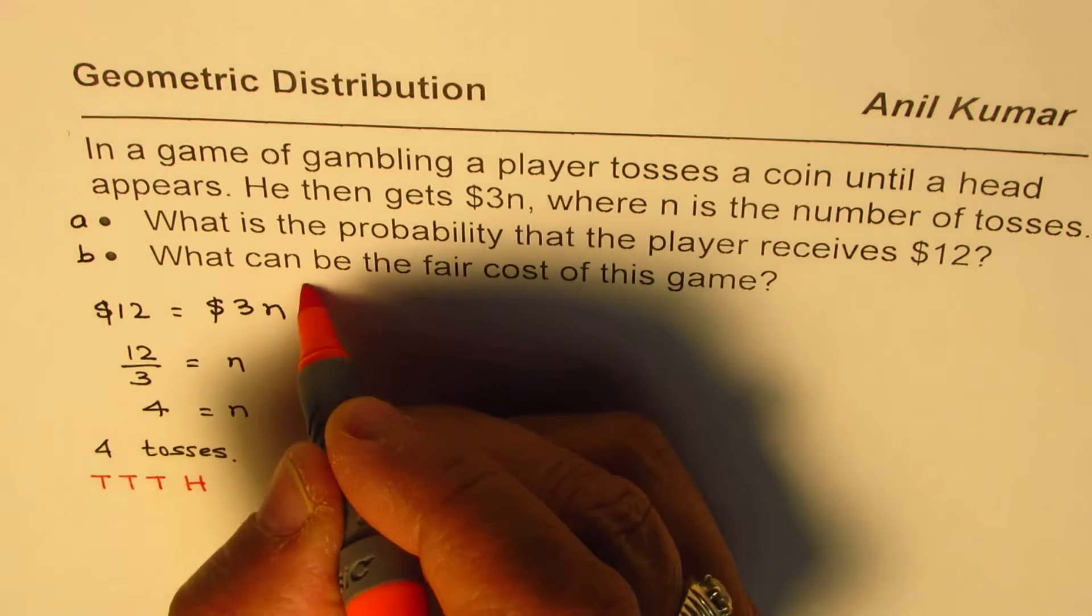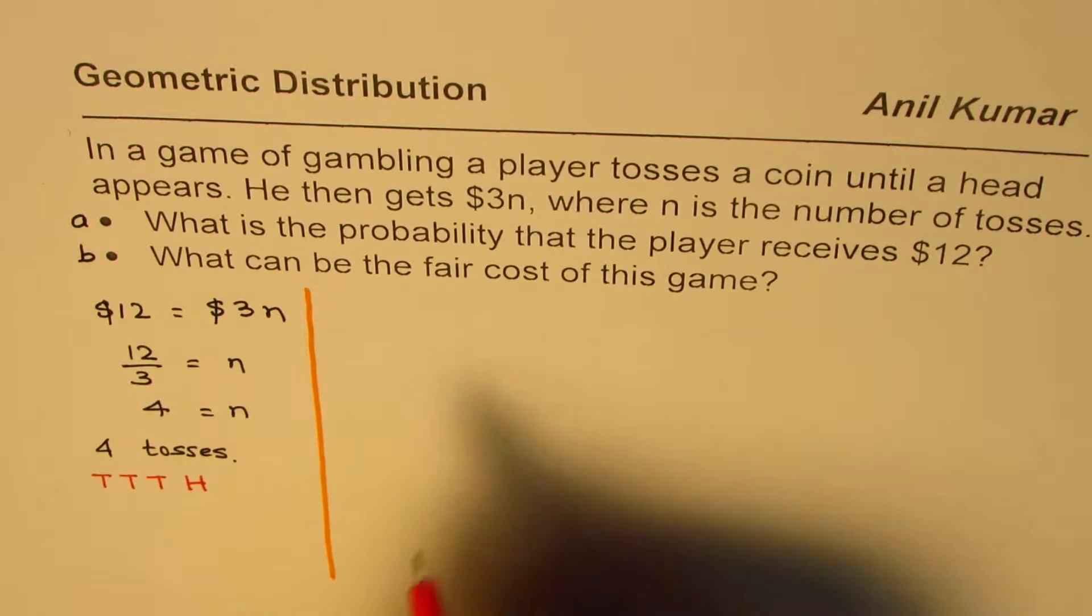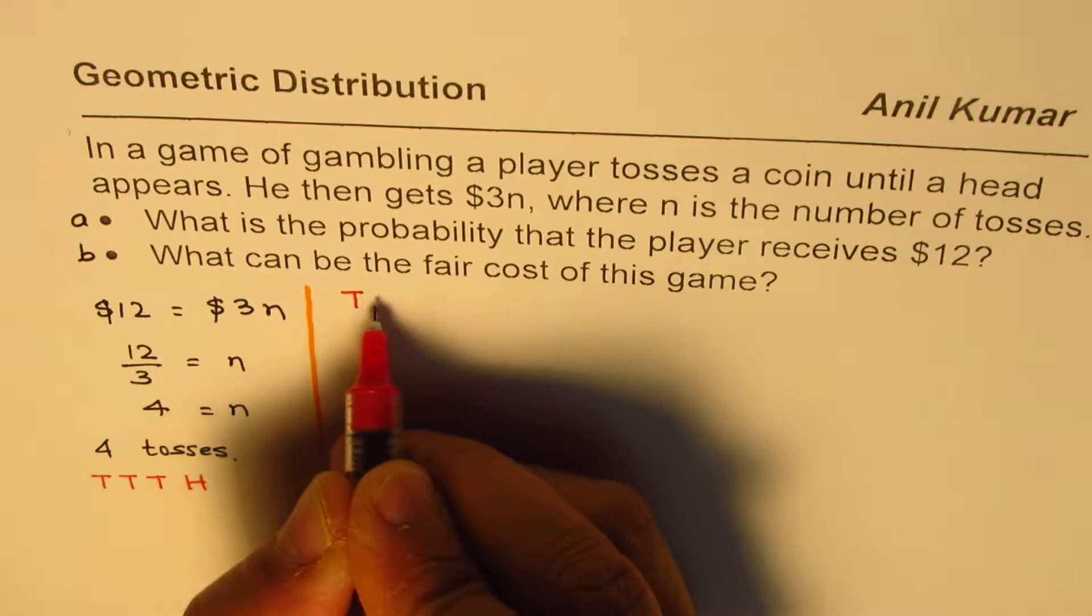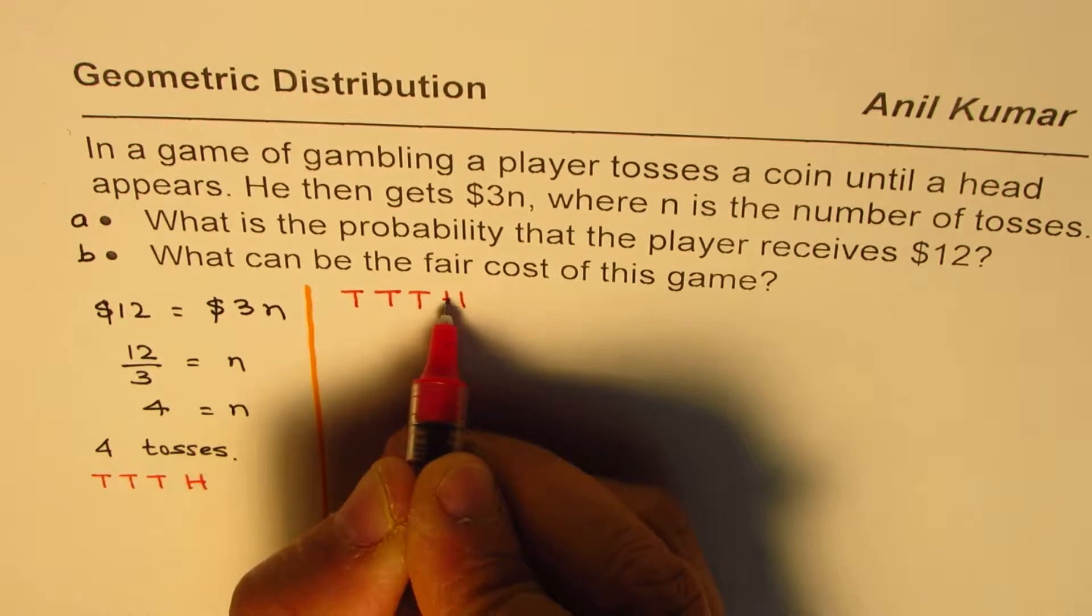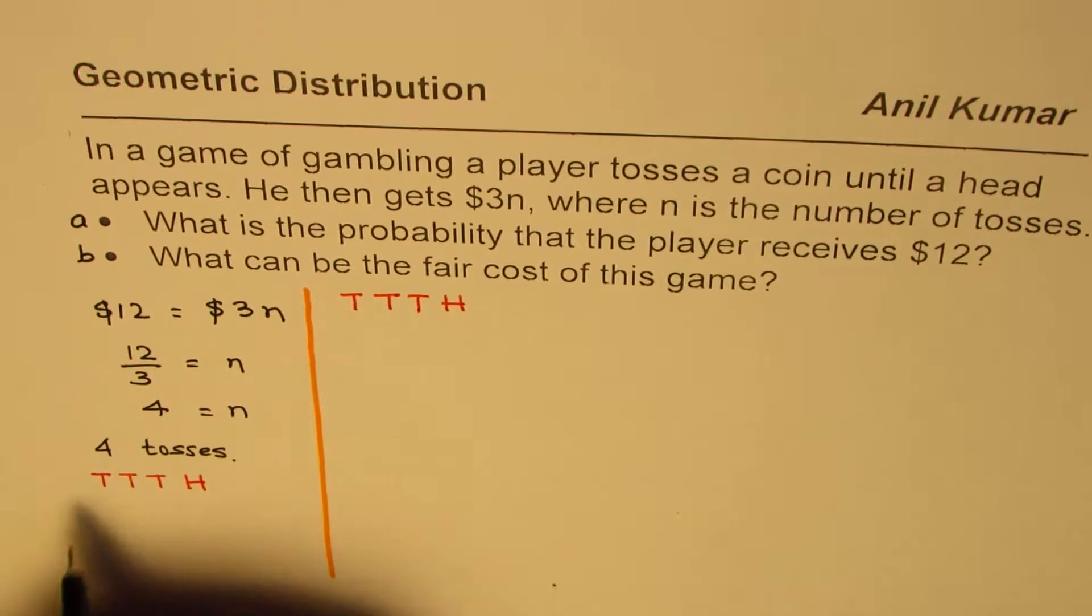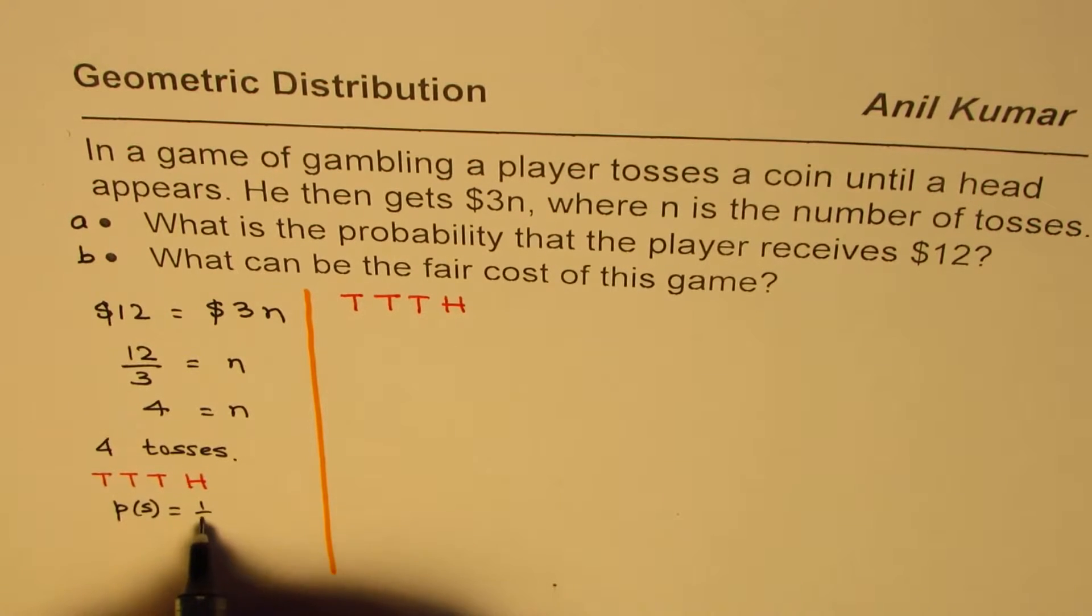Let me calculate the probability. We are saying heads is a success. So we have tails or failure, failure, failure, and then head. When you toss a coin, we are assuming this to be a fair coin. So the probability for success or head is equal to 1/2, and probability for failure, which is q for us, is also 1/2.